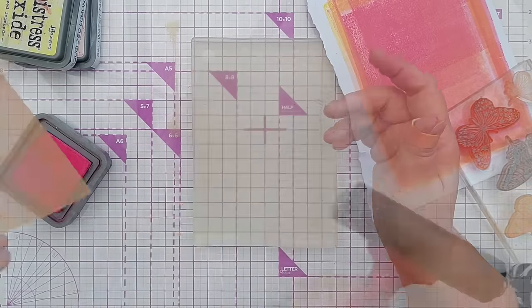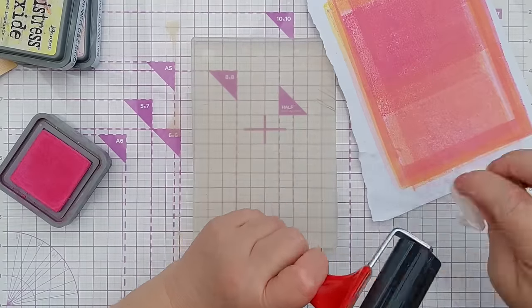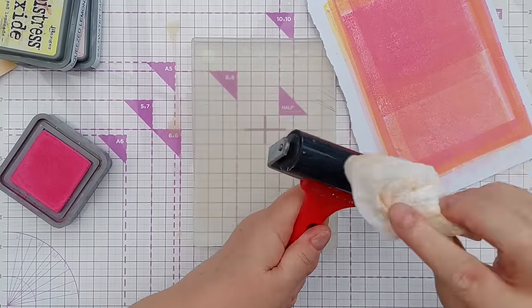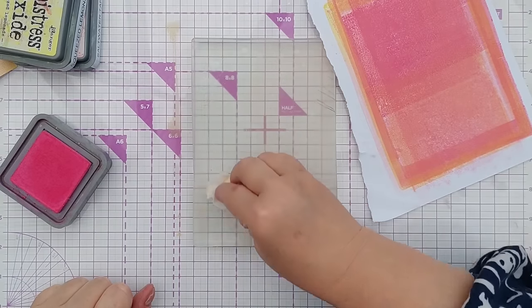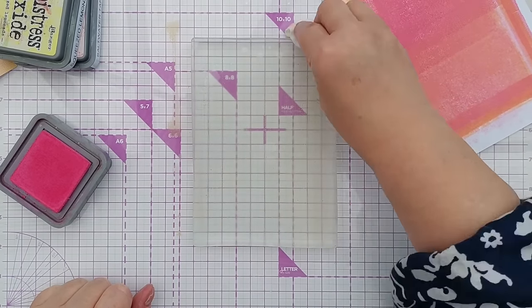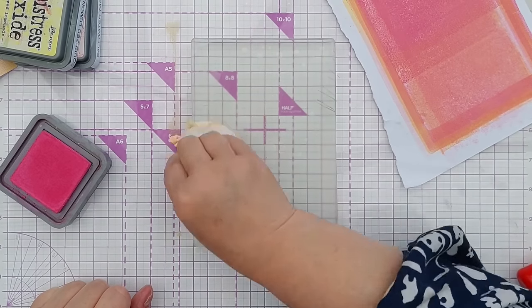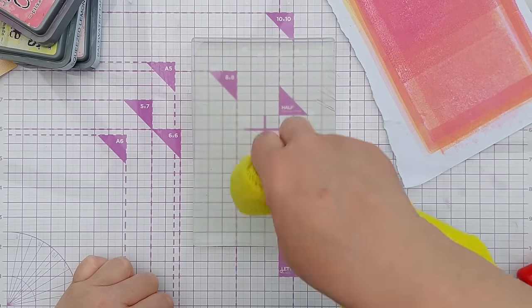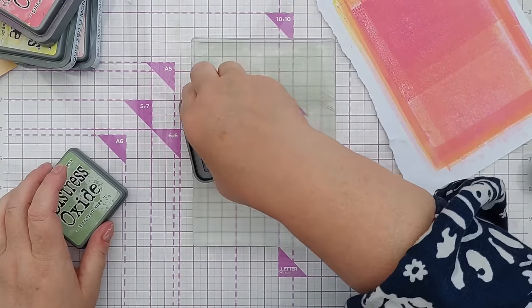So that's fine. I am going to clean my brayer because I'm going to switch color families now. I'm going to go to green next and I think I'll clean my gel plate as well to see how easy it is to clean. Just a damp baby wipe or a damp cloth and you're all sorted. I do dry the gel plate in between and now some bundled sage.